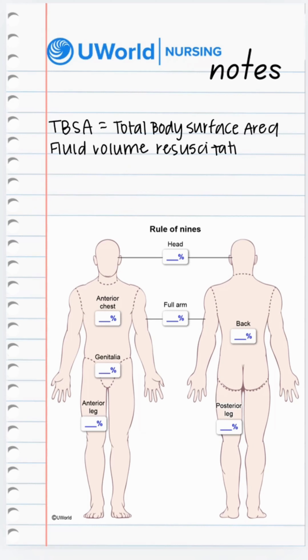We call it the Rule of Nines because each body part is either considered 9% or is a multiple of 9. Let's take a look.